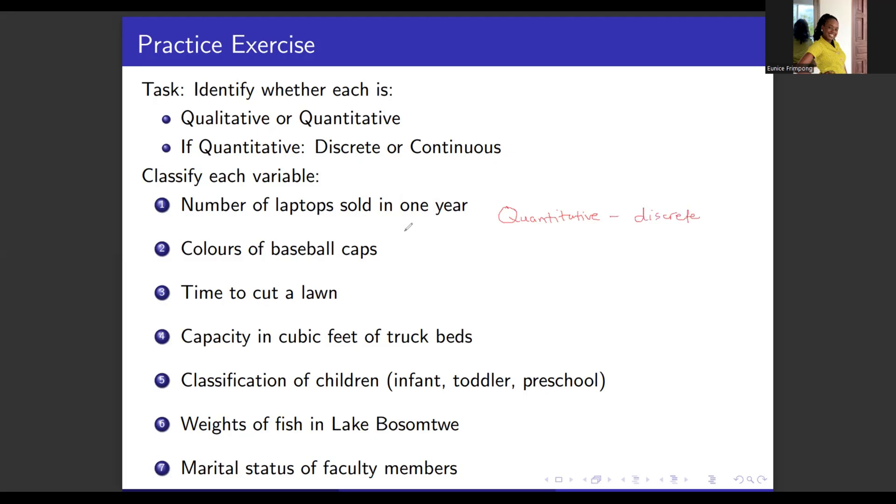Second example, colors of baseball caps. This is qualitative because we don't use numbers to represent. We just describe it. Time to cut a lawn. We use a number to describe this, so it is quantitative. Is this discrete or continuous? This is continuous because it can be measured. It cannot be counted.